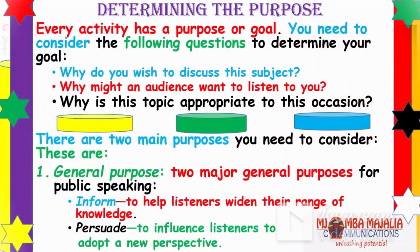Step three: determining the purpose. Every activity has a purpose or goal. Why do you wish to discuss this subject? Why might an audience want to listen to you? Why is this topic appropriate for this occasion? There are two main purposes: the general purpose — do you want to inform them, or do you want to persuade them? Persuasion goes beyond informing — you want the audience to take some action.